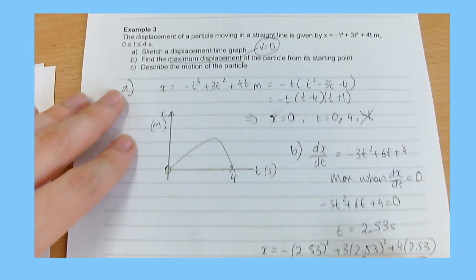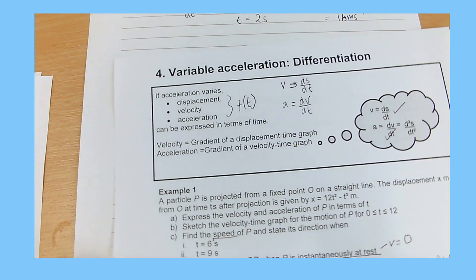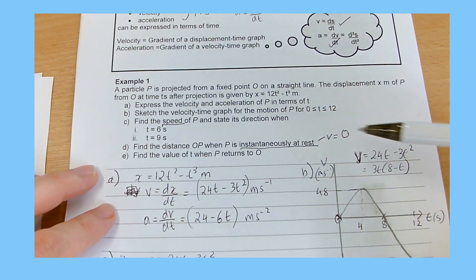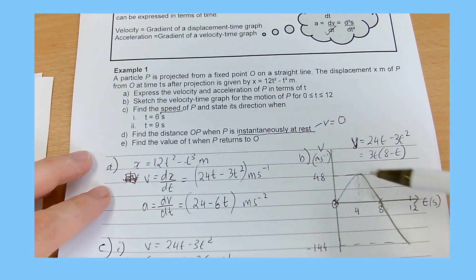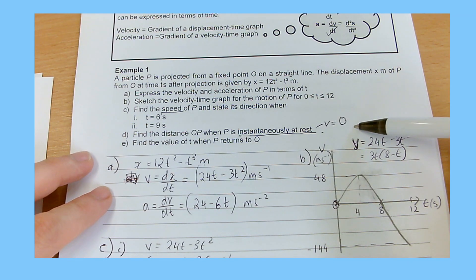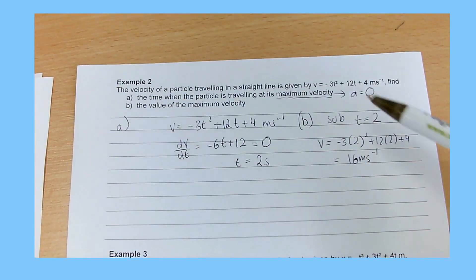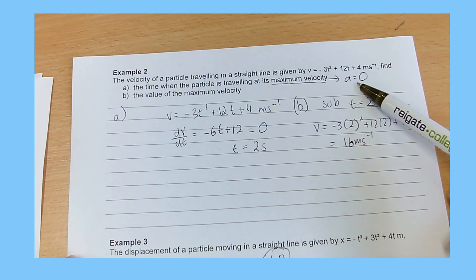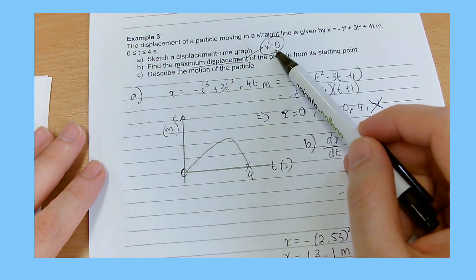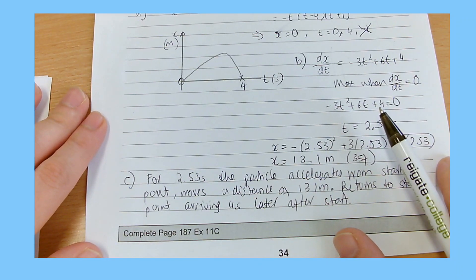Quick recap: remember how differentiation links displacement, velocity, and acceleration. Key conditions: instantaneously at rest means velocity equals zero; maximum velocity means acceleration equals zero; maximum displacement also means velocity equals zero. There are practice questions at the end — and that's the end of this video.